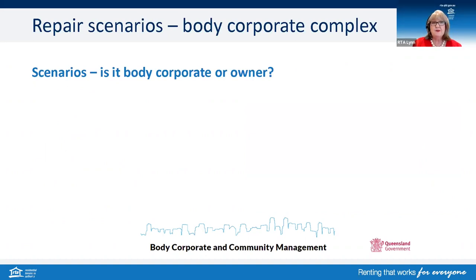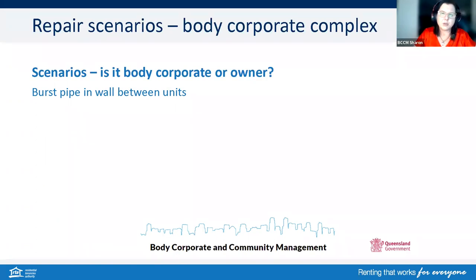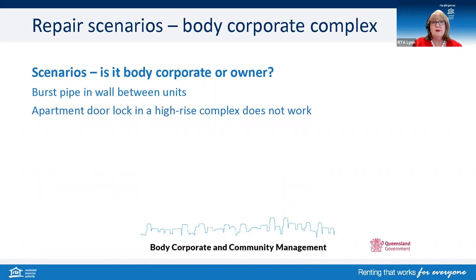Let's have a look at some scenarios — whether it's body corporate or whether it might be an owner. First, a burst pipe in a wall between units. A burst pipe located between two units is most likely the body corporate's responsibility, regardless of the plan of subdivision. Second, an apartment door lock in a high-rise complex does not work. The lock on a door located between the boundary of the unit and the common property is usually the body corporate's responsibility if registered under a building format plan. If it's a standard format plan, it's most likely the owner.